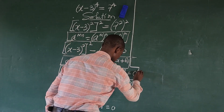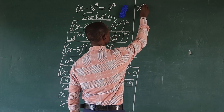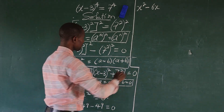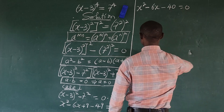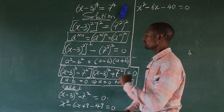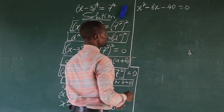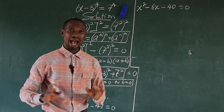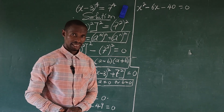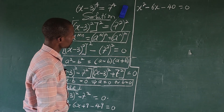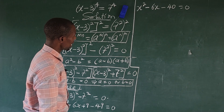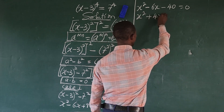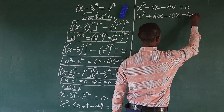So this gives us x to the power of 2, minus 6x, then plus 9 minus 49 gives us minus 40, equal to zero. This is a quadratic equation — we can solve this using the factorization method. We bring out all the factors of 40 and pick two that when multiplied give us minus 40 and when added give us minus 6. That gives us plus 4 and minus 10. So we're going to have x squared plus 4x minus 10x minus 40, equal to zero.